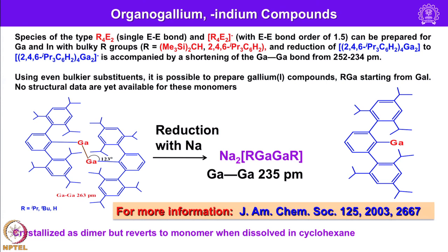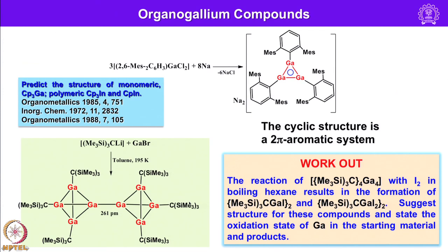This compound crystallizes as a dimer but reverts to monomer when dissolved in cyclohexane. Taking a monoaryl gallium dichloride and reducing it with sodium leads to a cyclic structure having a 2-pi aromatic system. Taking trimethylsilylmethyl lithium and treating with gallium bromide, one can make a dimeric species. The reaction of this compound with iodine in boiling hexane results in products of known composition — one should suggest the structure for this compound and state the oxidation state of gallium in the starting material and product.